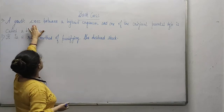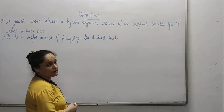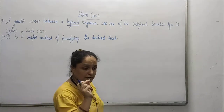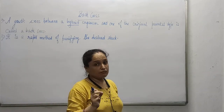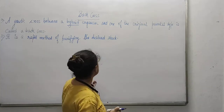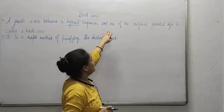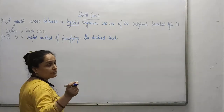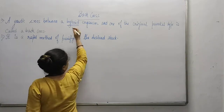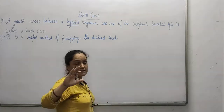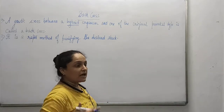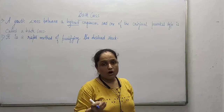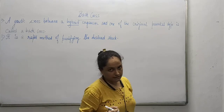What is it? It is a genetic cross between the hybrid organism — this hybrid organism is the organism which you get in the F1 generation, that is the same progeny — and one of the original parental types. That parent may be the recessive parent or it may be the dominant parent.